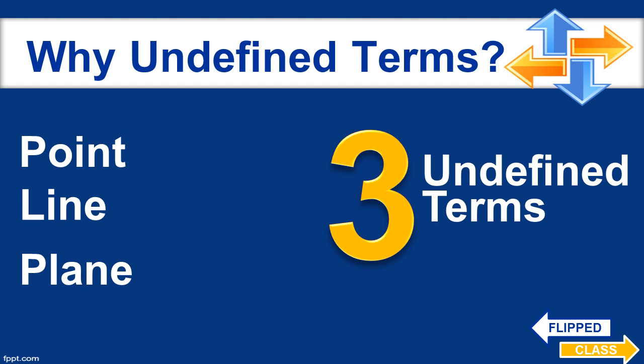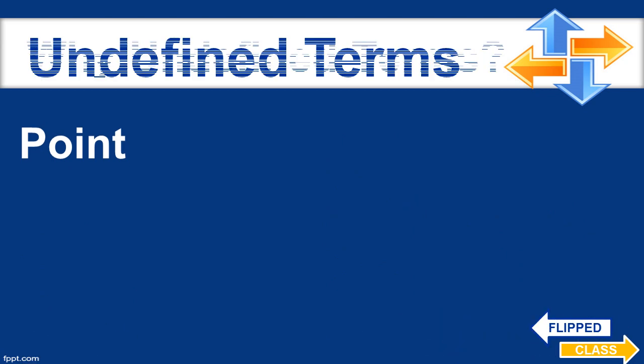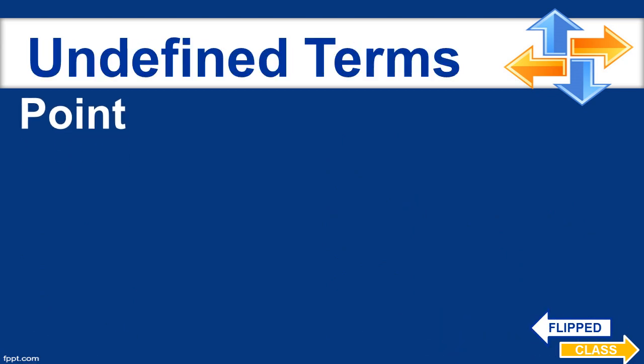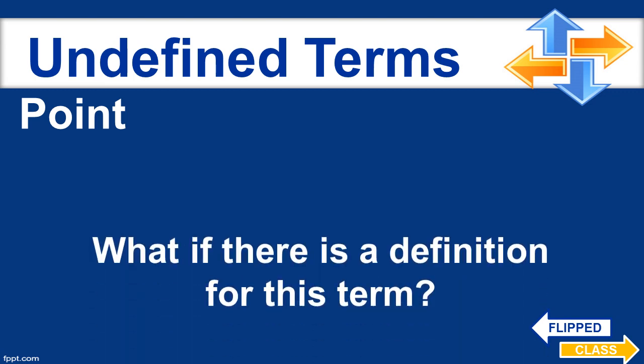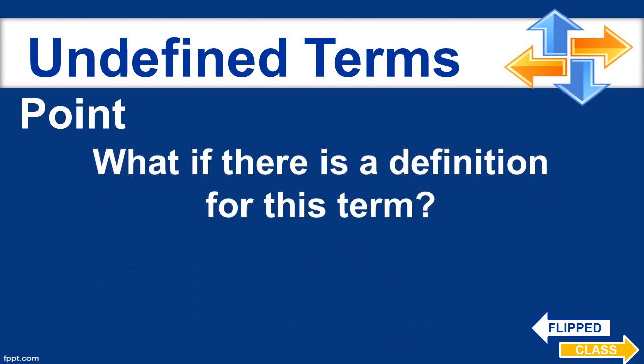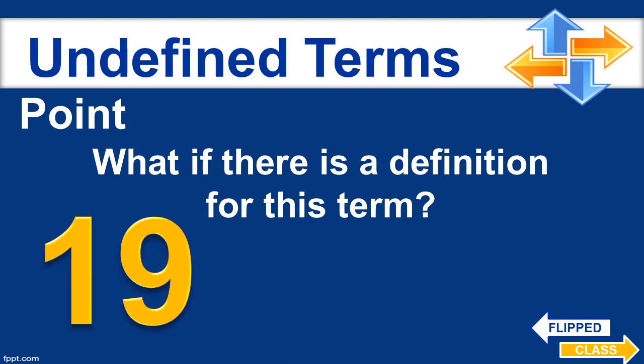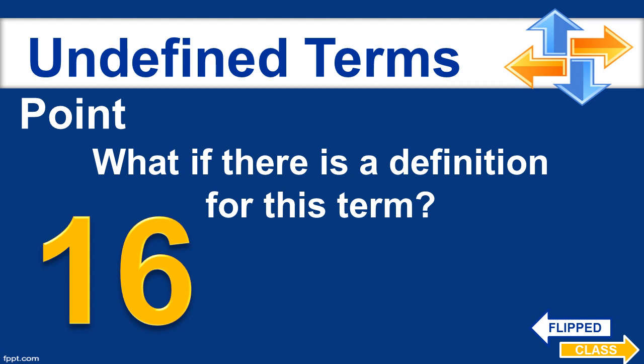Now, let's examine why they are called undefined terms. Let's start with the point. You might say there is a definition. But what if there is really a definition for this term? Can you think of any definition? In your own words, try to define what a point is. Let's find out if it's really undefined or if you could define it on your own. You have 20 seconds for this. Make up your best definition of what a point is.